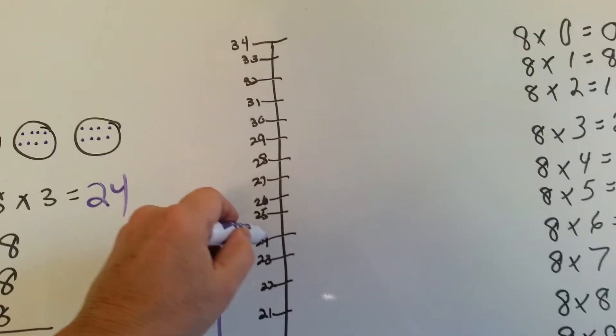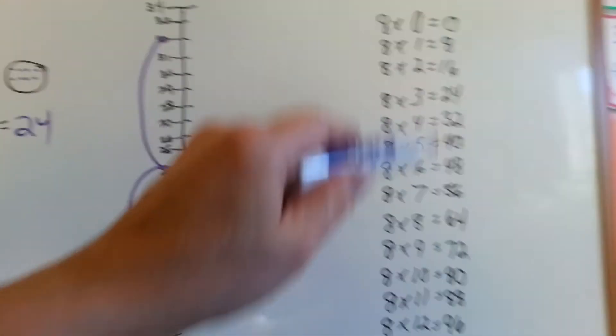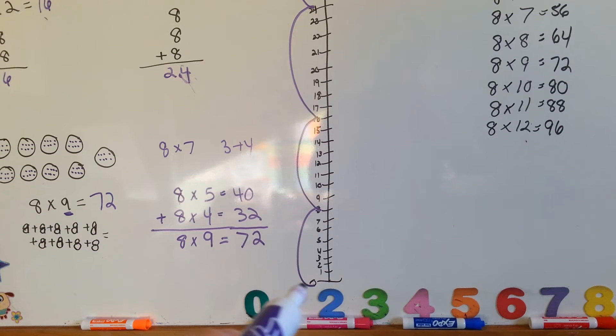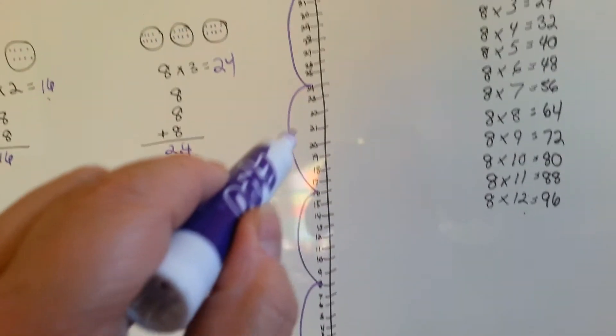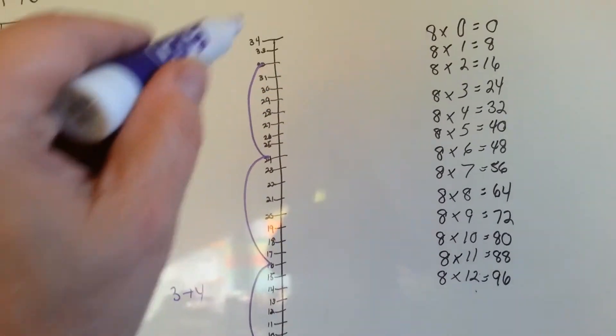Thirty-two. And if I could keep going, we could do them all, couldn't we? But I don't have enough room. So you can see how it skip counts: eight, sixteen, twenty-four, thirty-two. The next one would have been forty if I had room.